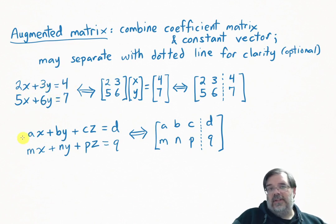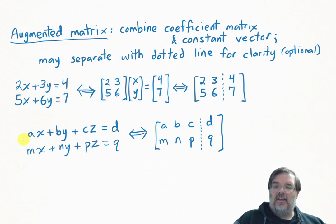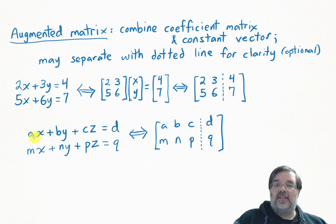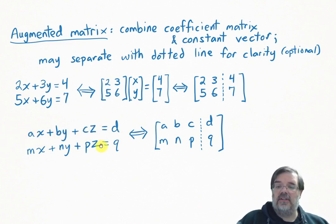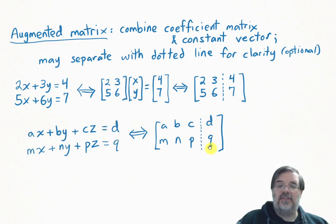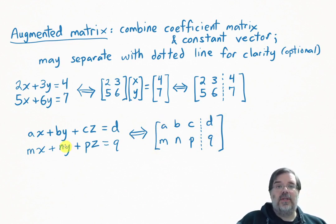Here's a different looking example but the same general idea — the equations of two planes. In this case, the coefficients are variables a, b, c, m, n, and p, but they are still coefficients of x, y, and z. D and q represent our constants. So this would be the augmented matrix for this system of equations.